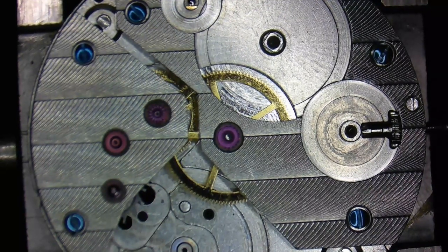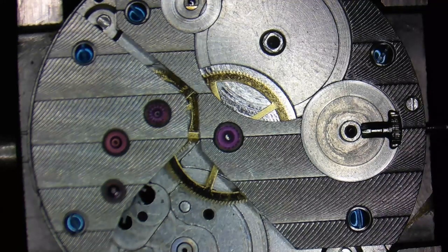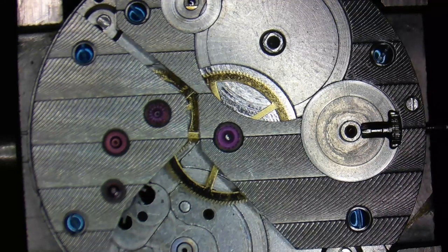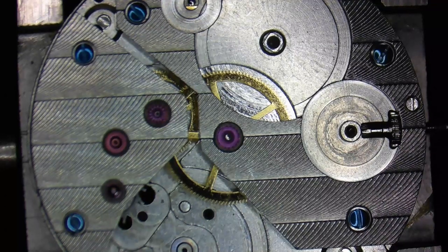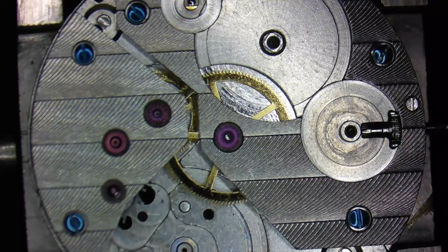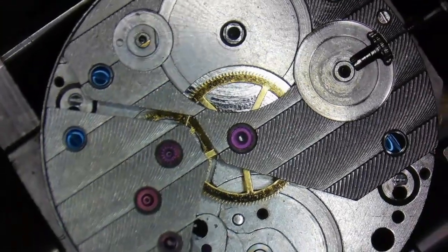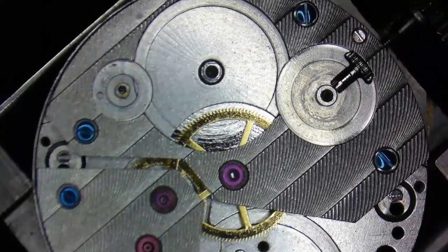The bridges you'll see as you get further into watch repair come in all different kinds of configurations. Sometimes the barrel bridge will just house the barrel and the train bridge will house the train wheels. Sometimes the escape wheel will have its own bridge. So let's start by disassembling the train bridge.